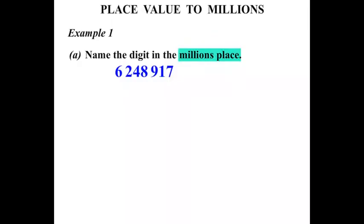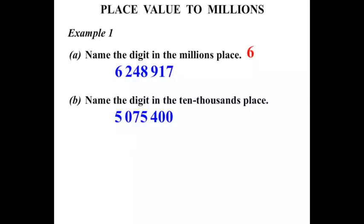So we're after that 10,000's place, and we start from the right: 1's, 10's, 100's, 1,000's, 10,000's — okay, that's the one we're after. The answer is seven.